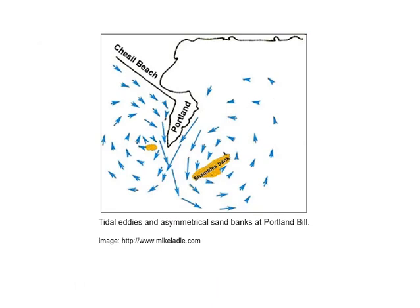Here's a sketch map showing roughly how that works for that particular case study. I think that's a nice example showing how something we normally talk about at a global or hemispheric scale — circulations of ocean water and atmosphere — can be brought down to a much more local scale, thinking about local coastal landforms. Always remember that things apply at a variety of different scales.